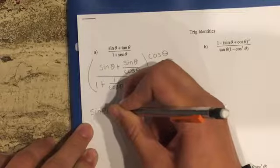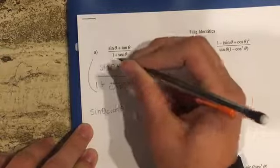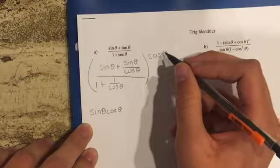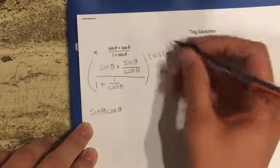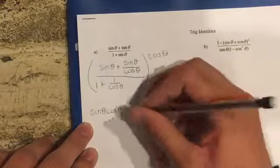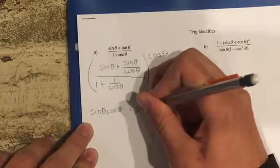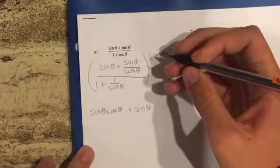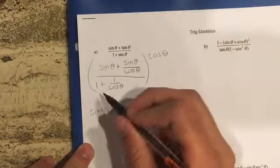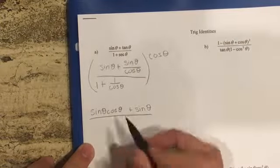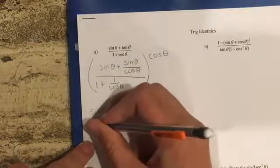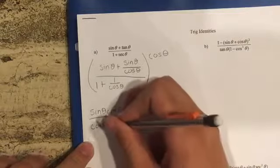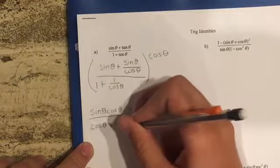Cosine of theta when you multiply it by sine of theta, and then multiplying it by sine of theta over cosine — cosines cancel and you just get plus sine of theta. On the bottom, multiply it by 1 and you get cosine, and the fractions cancel so you get plus 1.